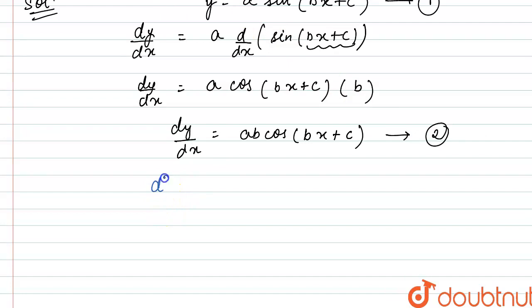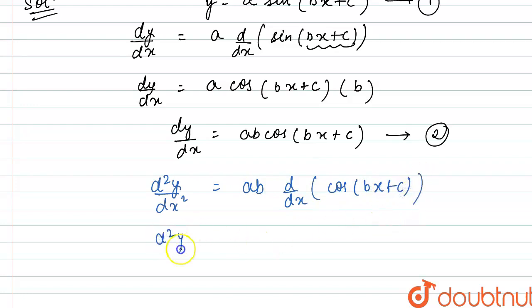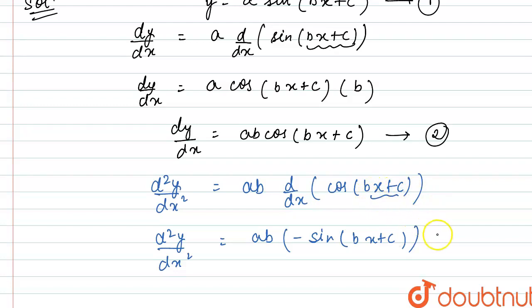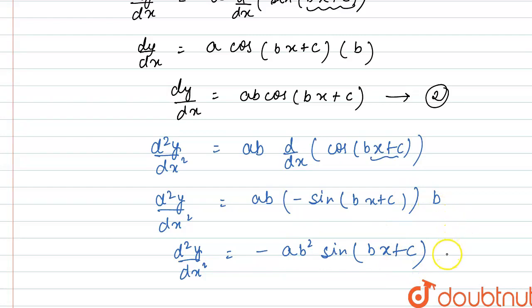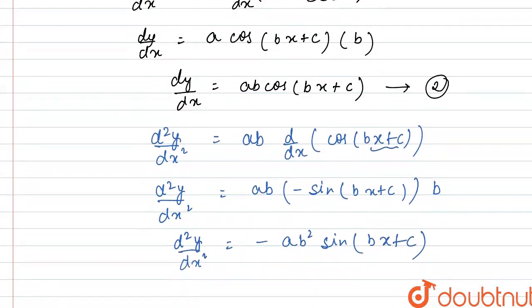Now we differentiate equation 2 again with respect to x. So d²y/dx² = ab · d/dx of cos(bx + c). The differentiation of cos x is −sin x, so we get −sin(bx + c). Again using the chain rule, differentiating bx + c: differentiation of bx is b, and differentiation of c is 0. So we get d²y/dx² = −ab²·sin(bx + c).